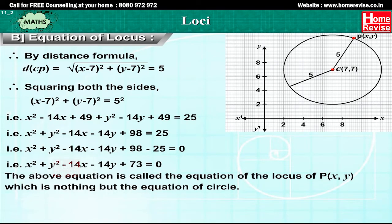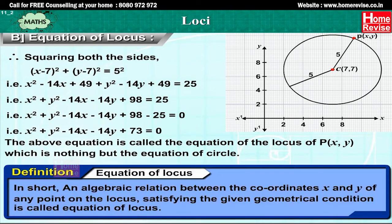This equation is called the equation of the locus of P(x, y), which is nothing but the equation of the circle. In short, an algebraic relation between the coordinates x and y of any point on the locus satisfying the given geometrical condition is called the equation of locus.